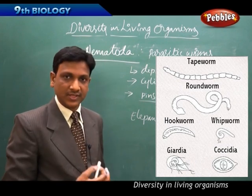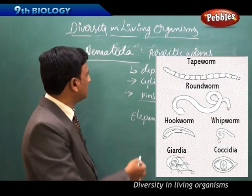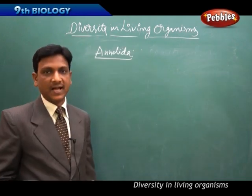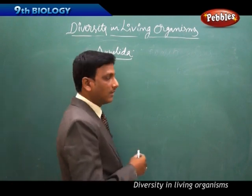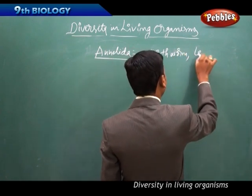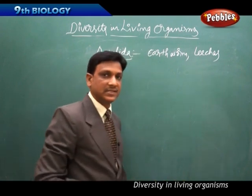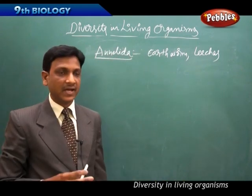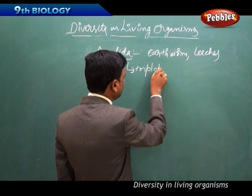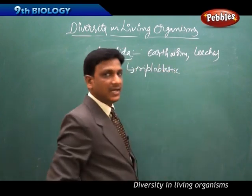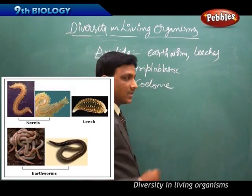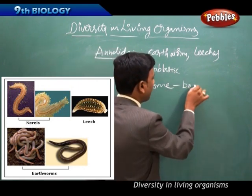Nematodes are intestinal worms. The next phylum is Annelida, which includes animals like earthworms and leeches. Annelida are triploblastic — having three layers of cells — and they have a true coelom, which is a true body cavity.